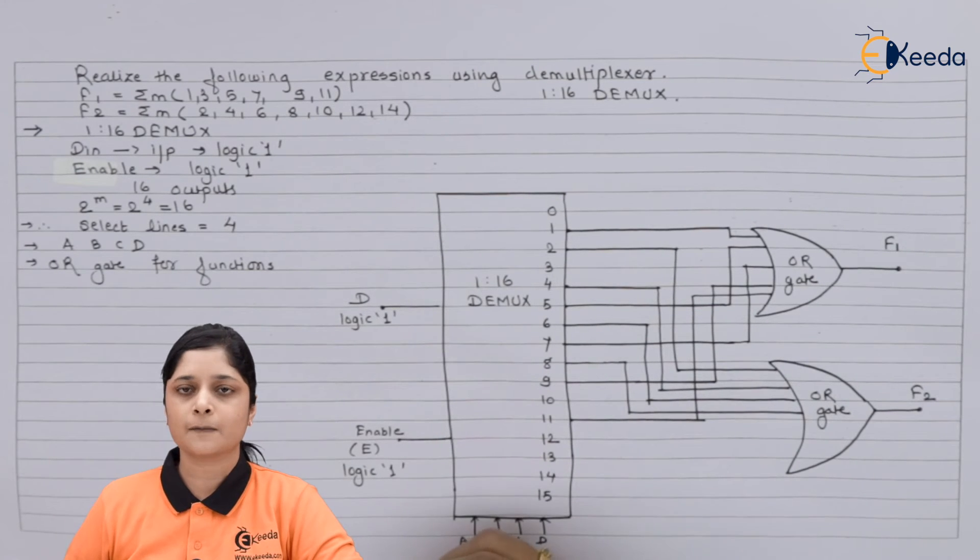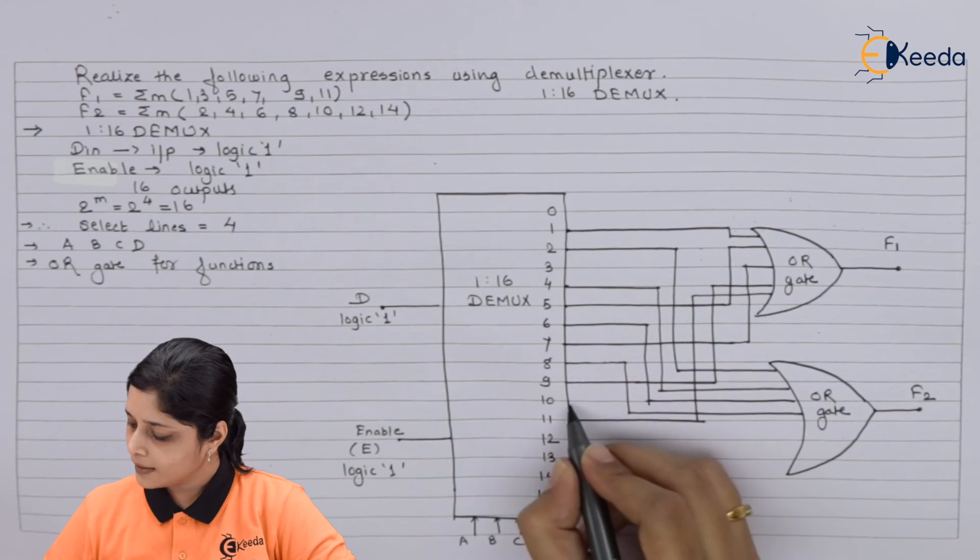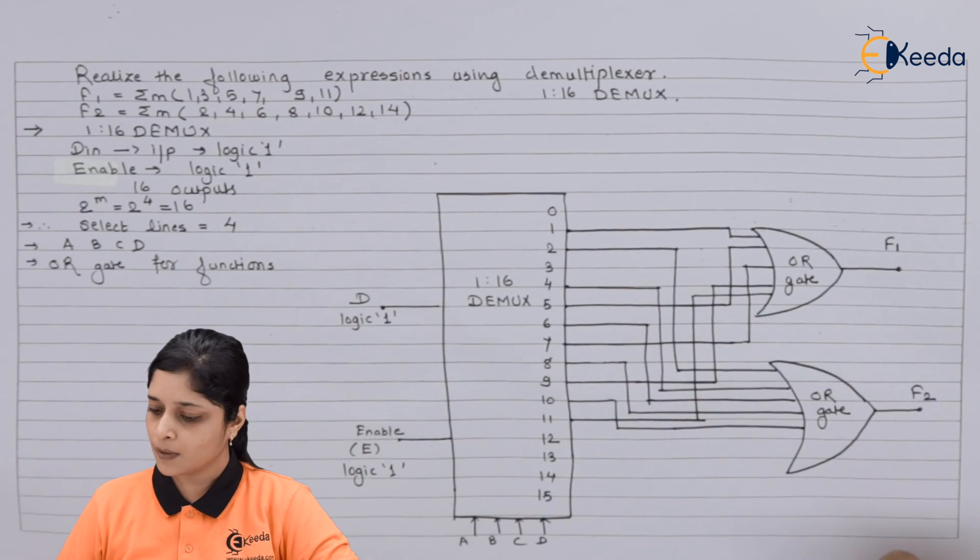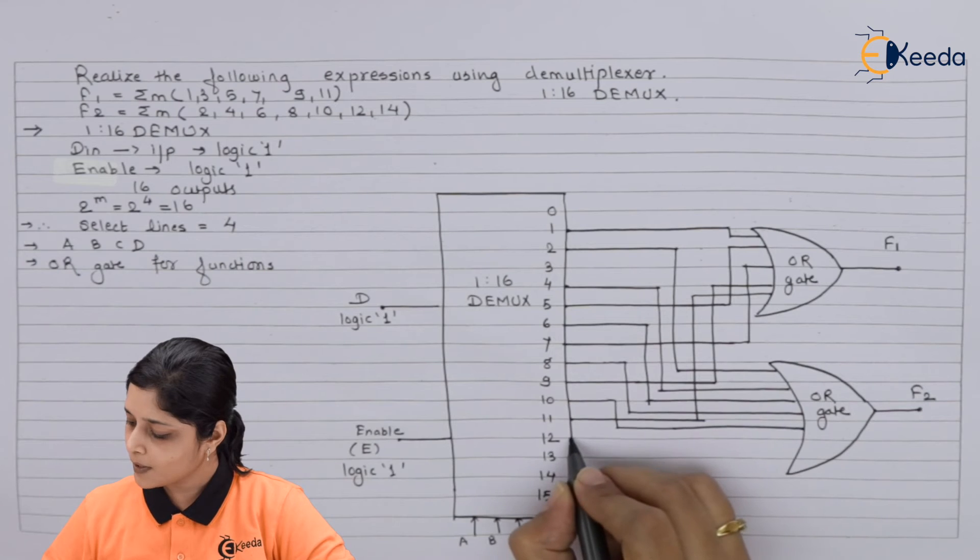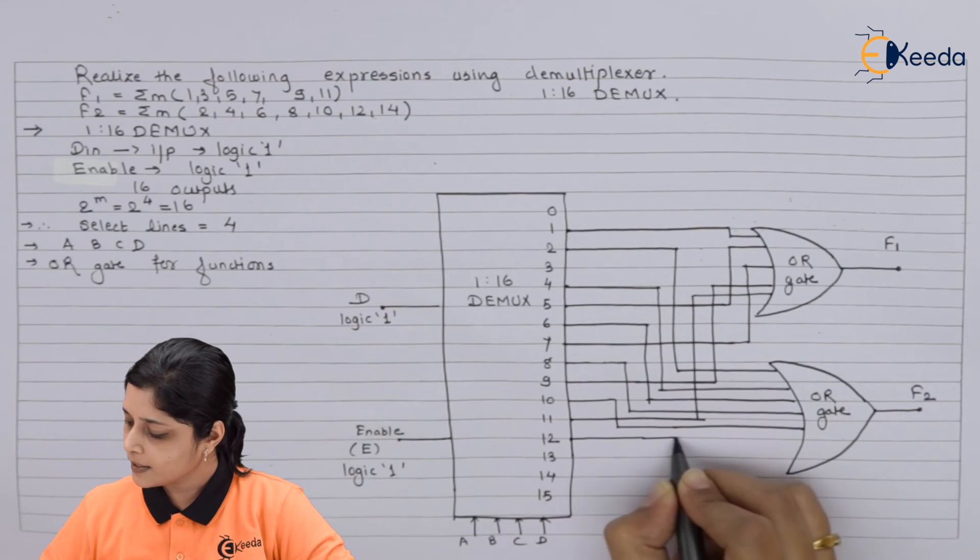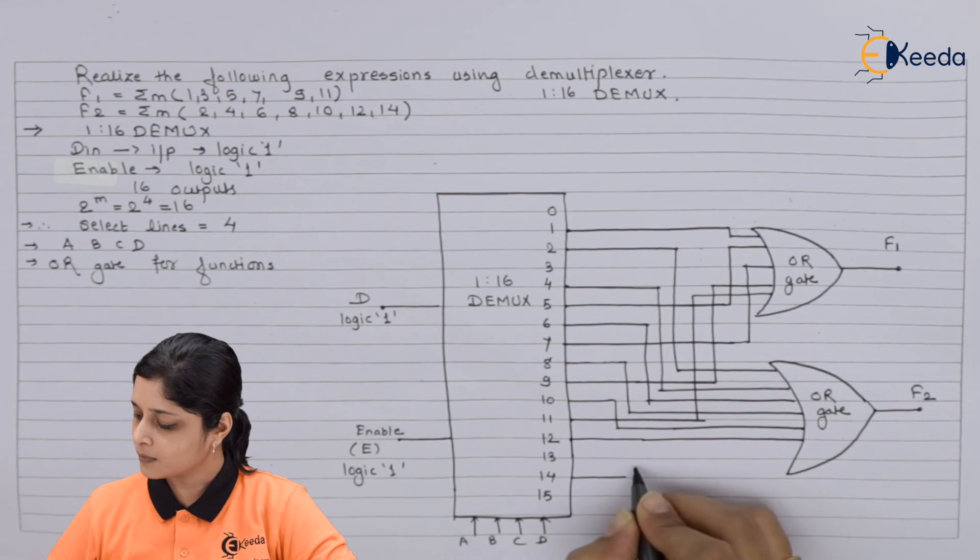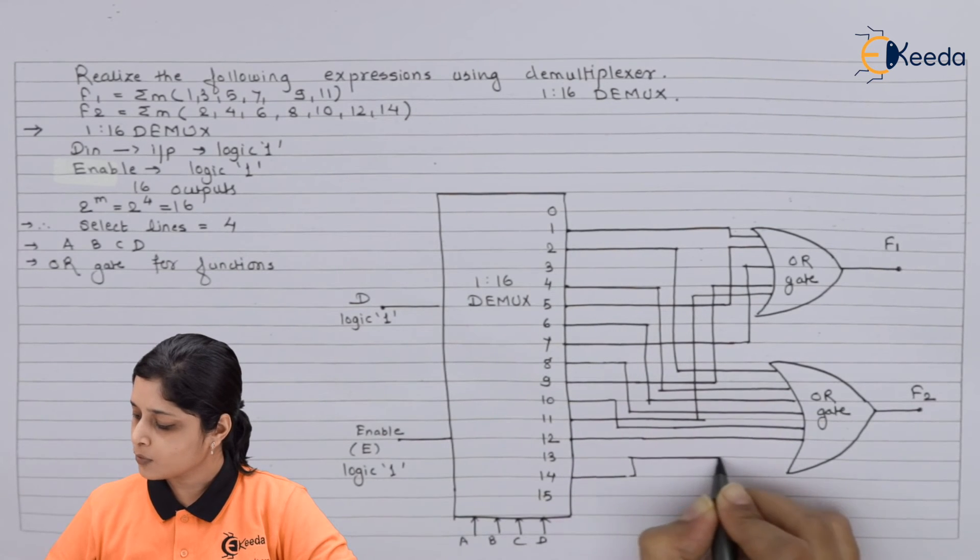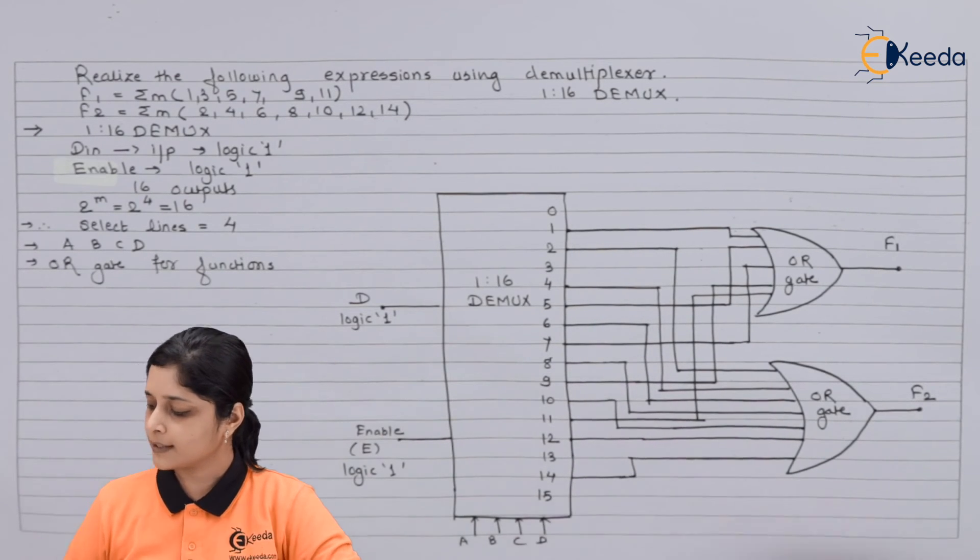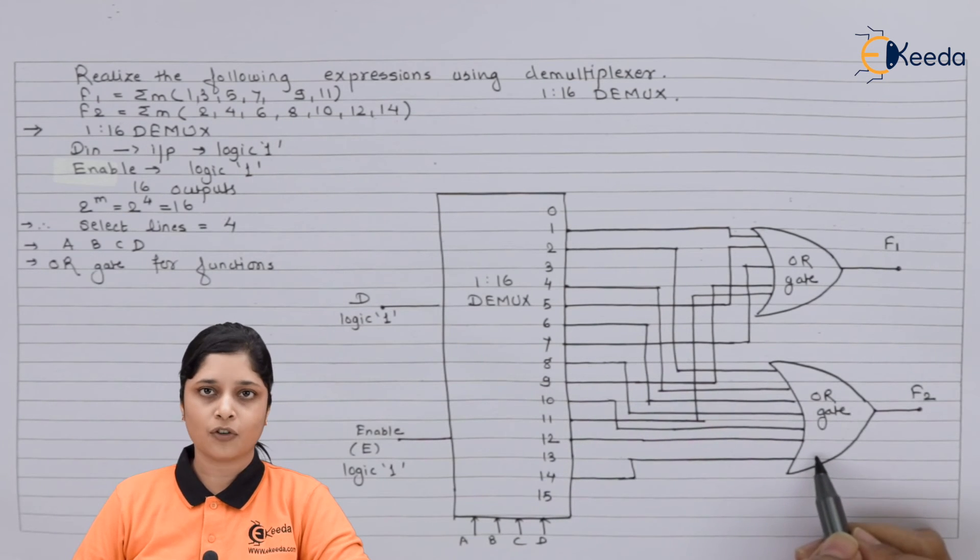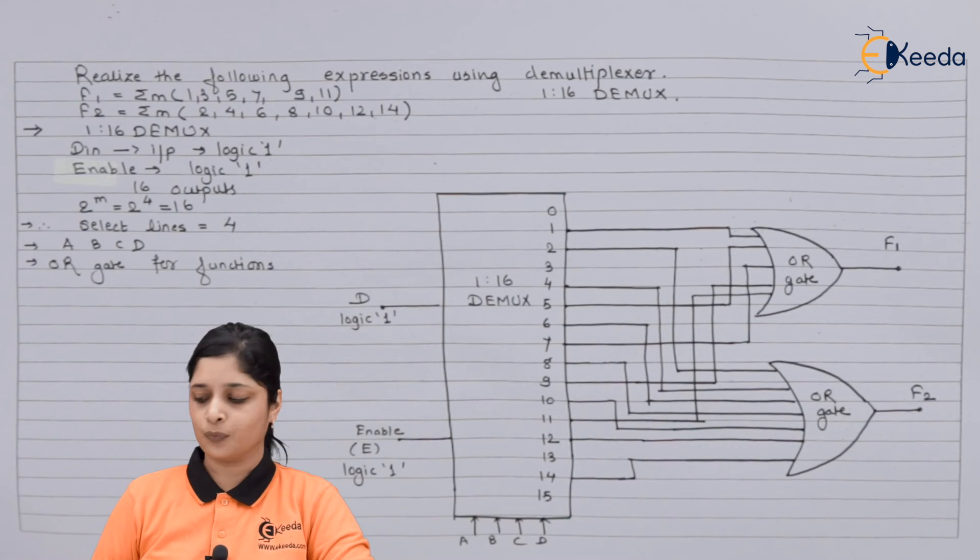Connect as it is. Then 10. In this way you have to connect all the minterms present in the given problem. Then directly 12 you have right here. And then 14. So for 14 you will draw like this. In this way you have to give the inputs to the second OR gate, that is second function f2.